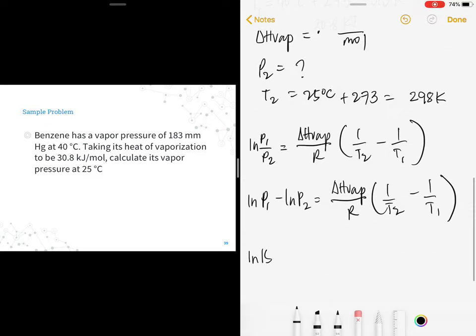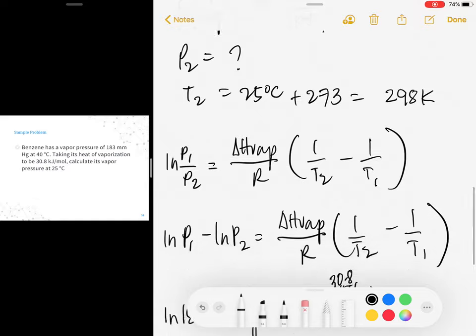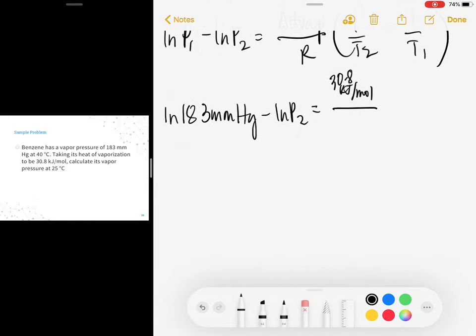Let's substitute the values. ln(183 mmHg) minus ln(P2), which is what we're looking for, equals the molar heat of vaporization 30.8 kilojoule per mole over R, 8.314 times 10 raised to negative 3 kilojoule per mole Kelvin. Why did we use this? So the units will cancel. Then 1 over T2, which is 298 Kelvin, minus 1 over 313 Kelvin.